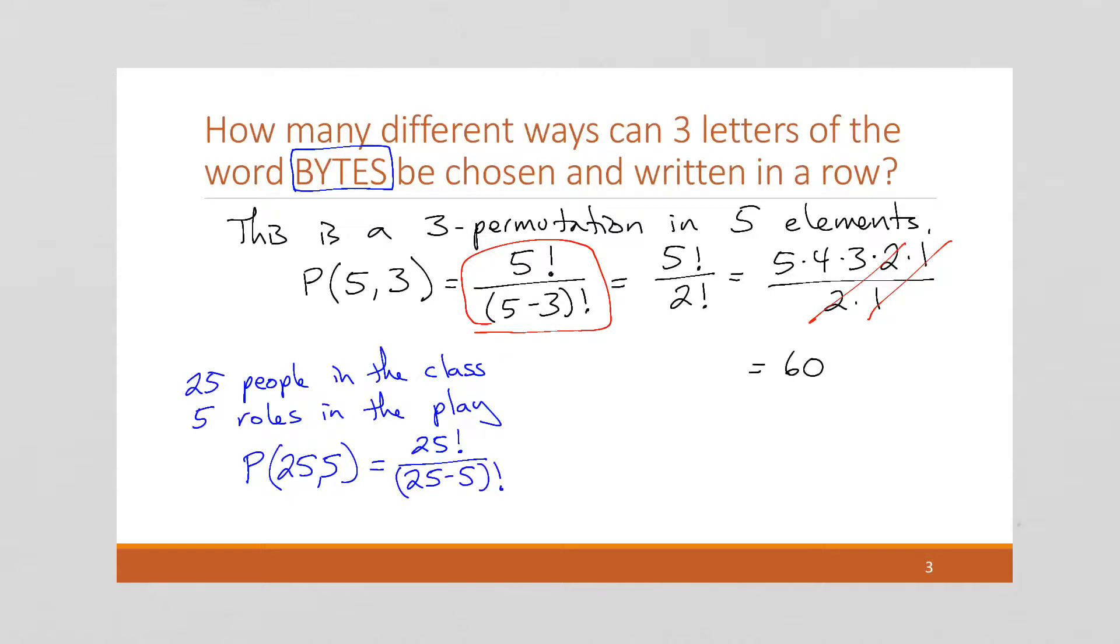Divided by 25 minus 5 factorial. Now, if you try to calculate 25 factorial, your calculator may not even do it. But if it does, it's going to give, you're going to get a number with 25 digits. So it's a very, very long number. I don't even know how to read that number.